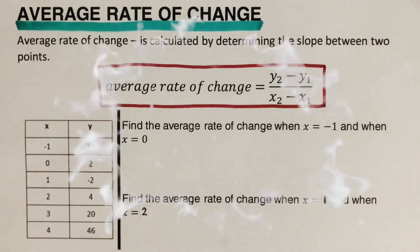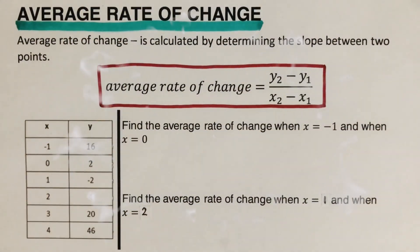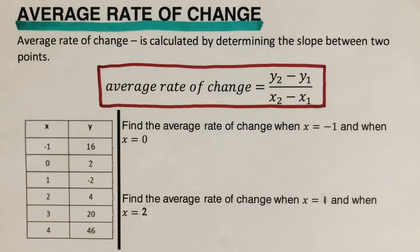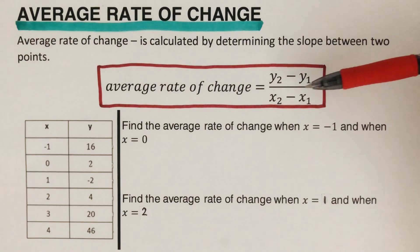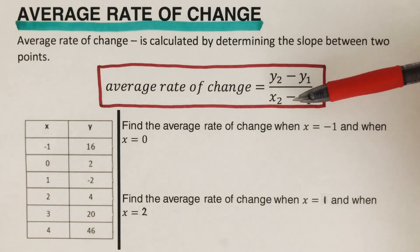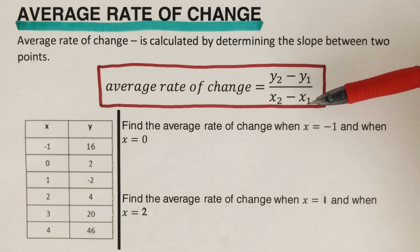Hello everyone. Today we will be computing the average rate of change. Average rate of change is calculated by determining the slope between two points. The formula for slope is y sub 2 minus y sub 1 over x sub 2 minus x sub 1.